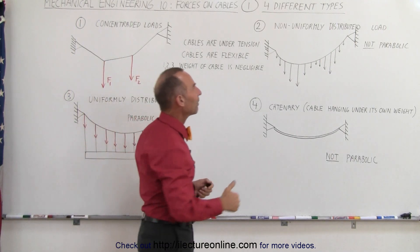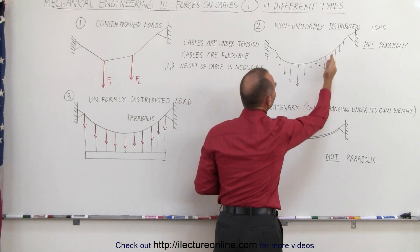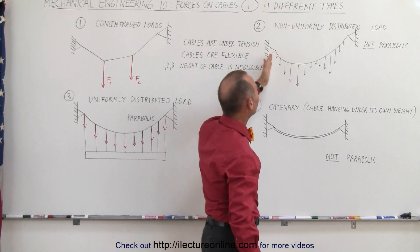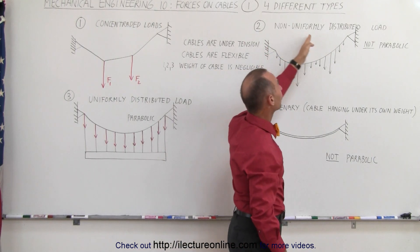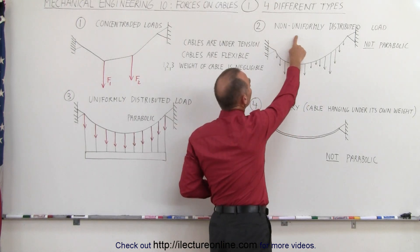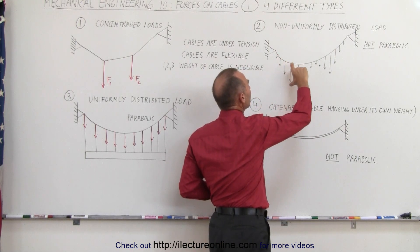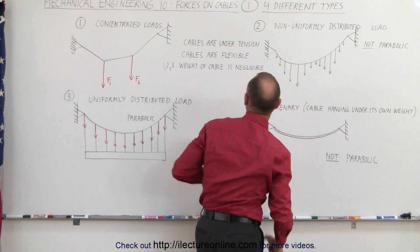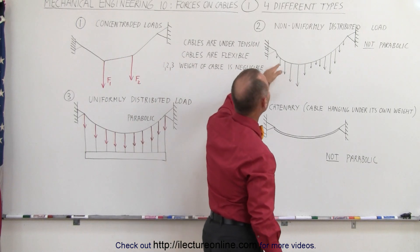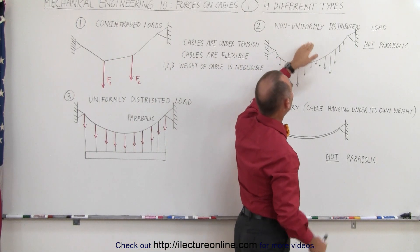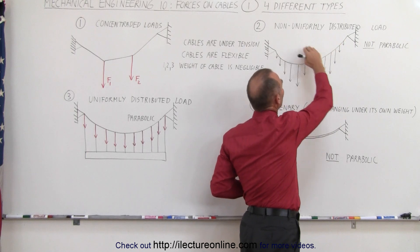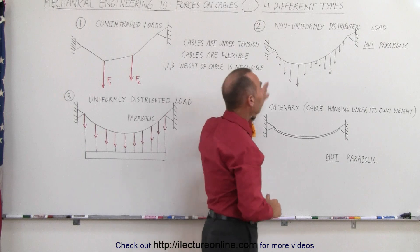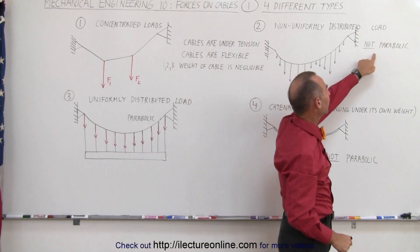We have situations where there are many more forces attached to the cable or suspended from the cable. Then we call that a non-uniform distributed cable. The reason why it's non-uniform is because the magnitude of the forces changes along the cable. But there's many attached points to the cable, so instead of just a few there are many, therefore it's distributed. It's what we call a distributed load but it's non-uniform because the forces are not the same. Because of that, the shape of the cable will not be parabolic.